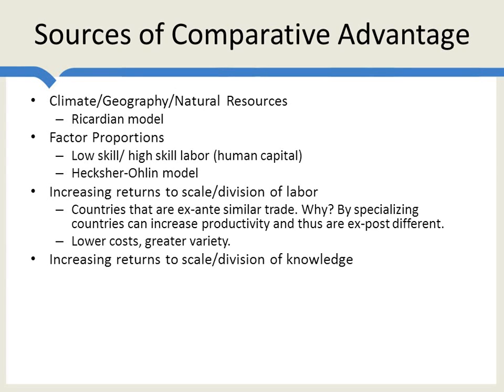When we think about increasing returns to scale, we typically think about a big dam, or a huge auto plant able to take advantage of robots the bigger it gets, or giant agricultural farms. But it's important to realize that increasing returns to scale can also refer to the division of knowledge. As people specialize, they become more knowledgeable about an area, and that is what increases their productivity. Think about physicians — we don't simply have generic physicians. We have heart surgeons, brain surgeons, podiatrists, specialists in the ear, nose, and throat, cancer specialists, diabetes specialists. By dividing knowledge among many different brains, we get a vast increase in productivity. These examples are more about interpersonal division of knowledge and increasing returns to scale in trade.